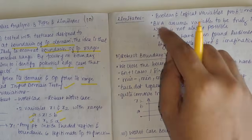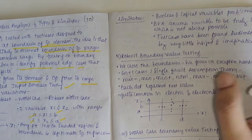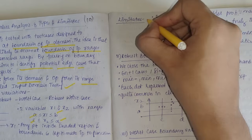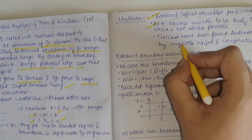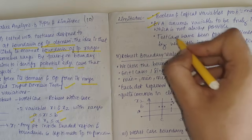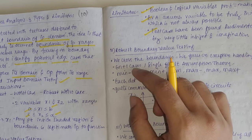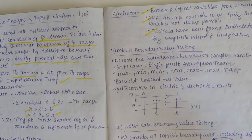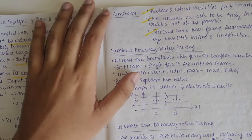The limitations of boundary value analysis: BVA works well for programs with several independent values bounded between physical limits. Boolean and logical variables are problematic. BVA assumes variables to be truly independent, which is not always possible. Test cases can be rudimentary because of very little insight and imagination — as black box testing, we have limited knowledge of code structure. There can also be loopholes where testing cannot be performed properly.